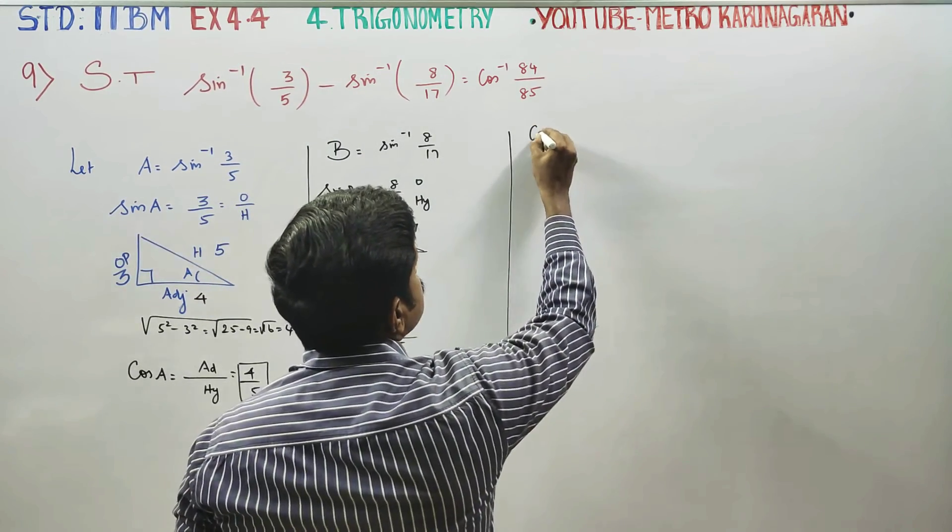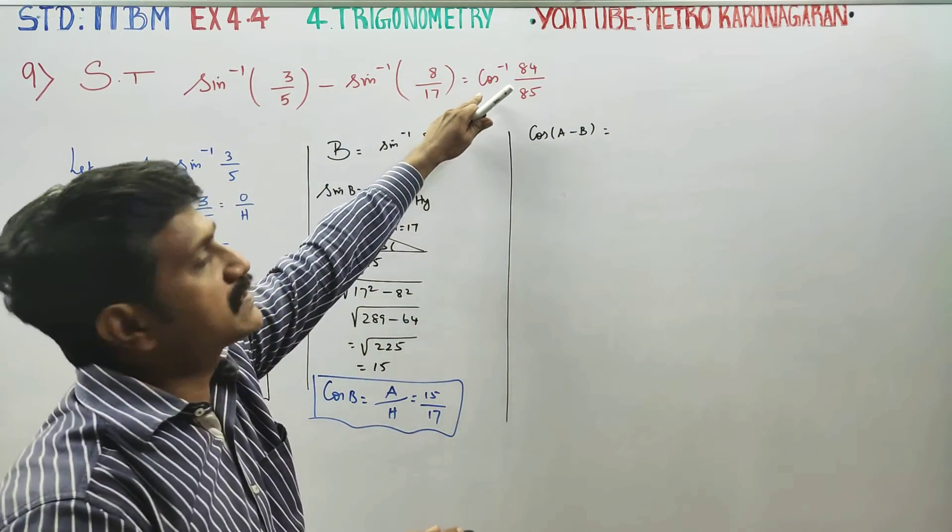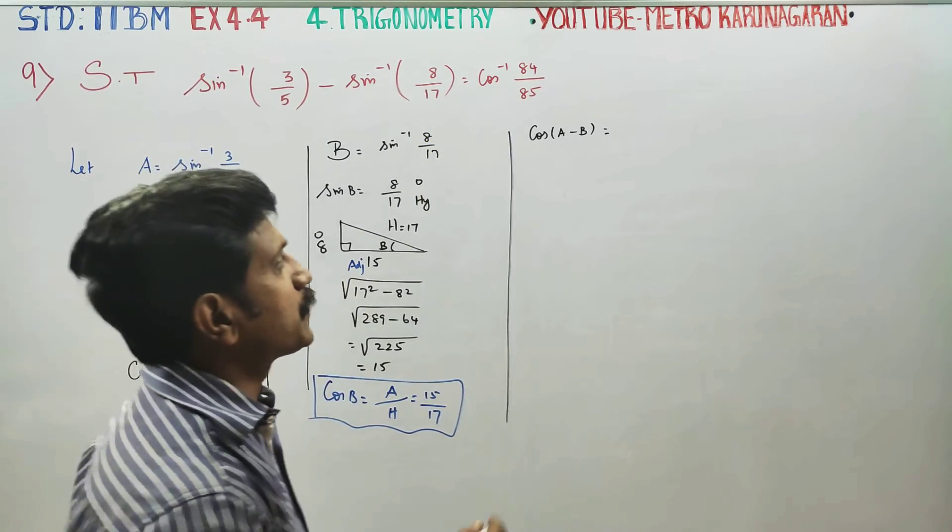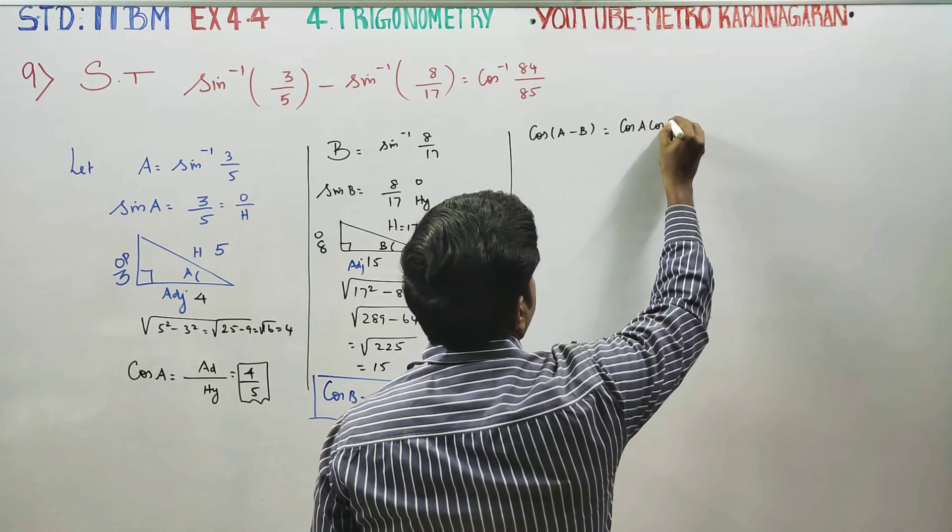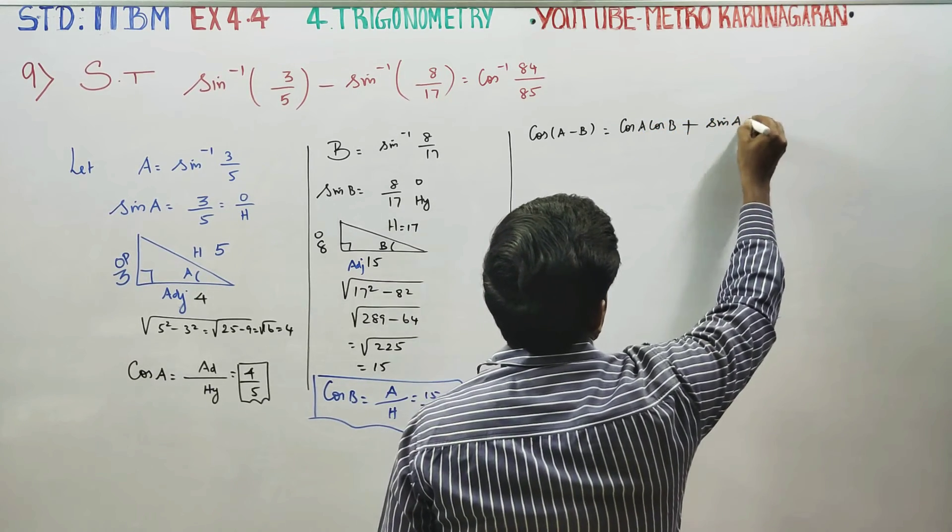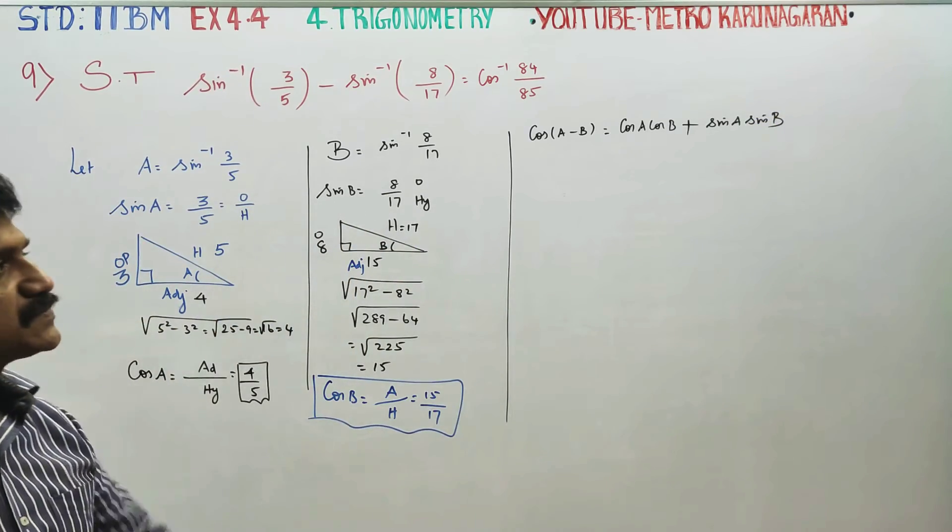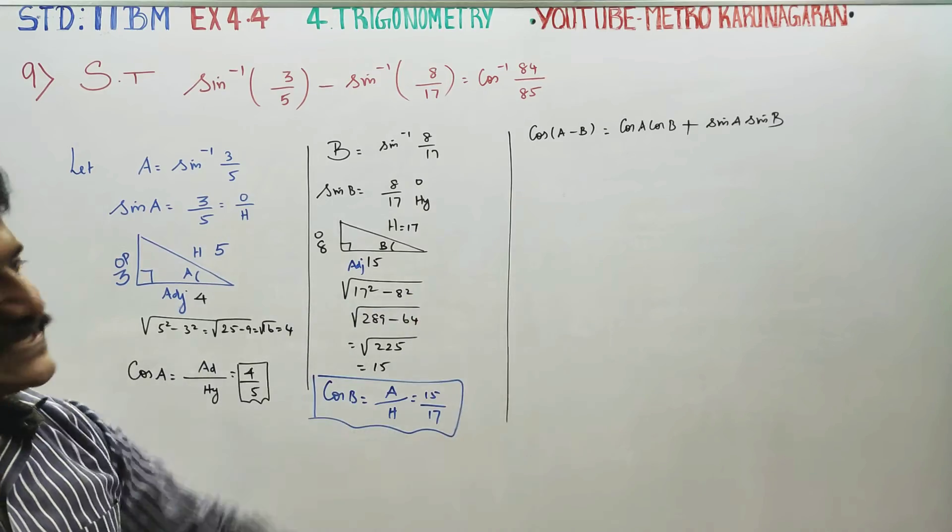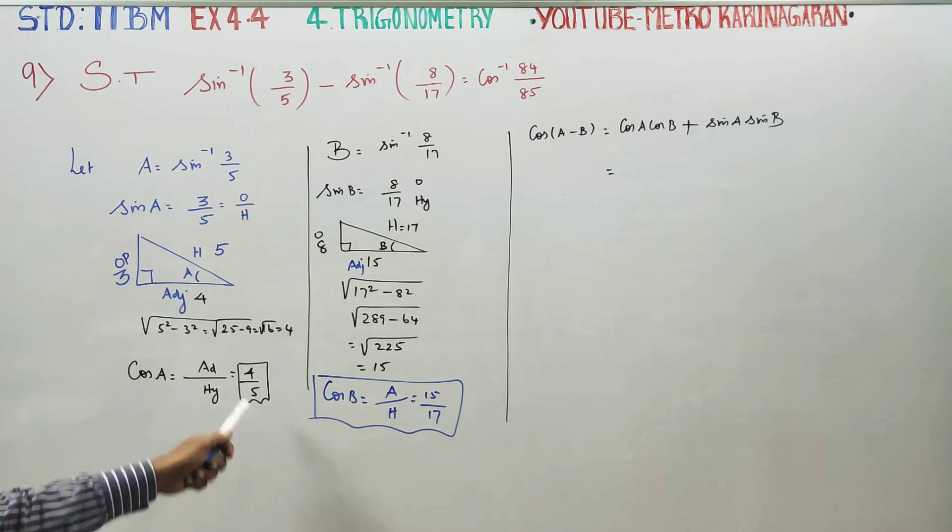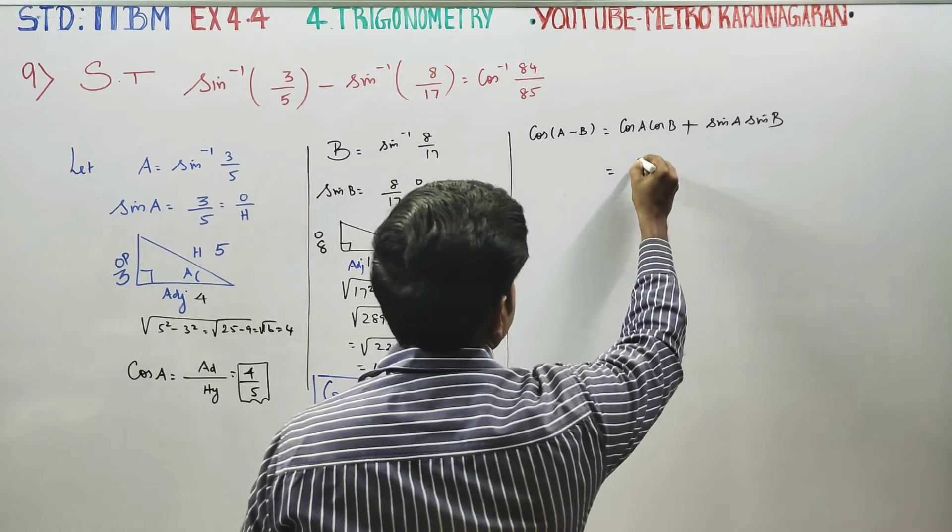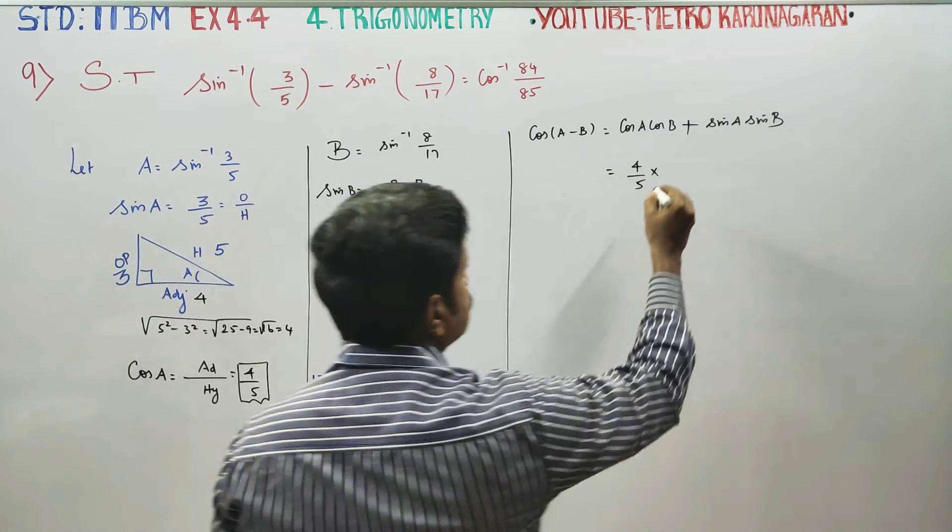Cos A minus B. It is the formula for cos A minus B. Cos A minus B is cos A cos B plus sin A sin B. What is cos A? 4 by 5. What is cos B? 15 by 17.